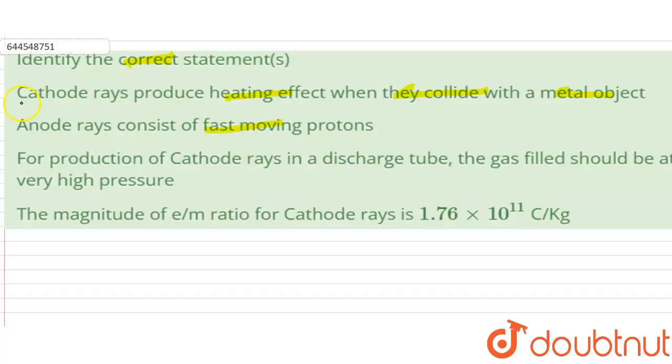The first option, cathode rays produce heating effect when they collide with a metal object. So cathode rays, when they collide with a metal object, they eject electrons. A beam of electrons produces heat, creating a heating effect. So our option one is true.